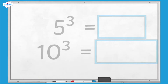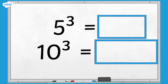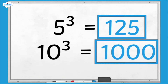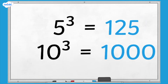Can you complete these statements? How did you get on? So 5 times 5 is 25, and then multiplied by 5 again is 125, and 10 times 10 is 100, and then multiplied by 10 again equals 1000.